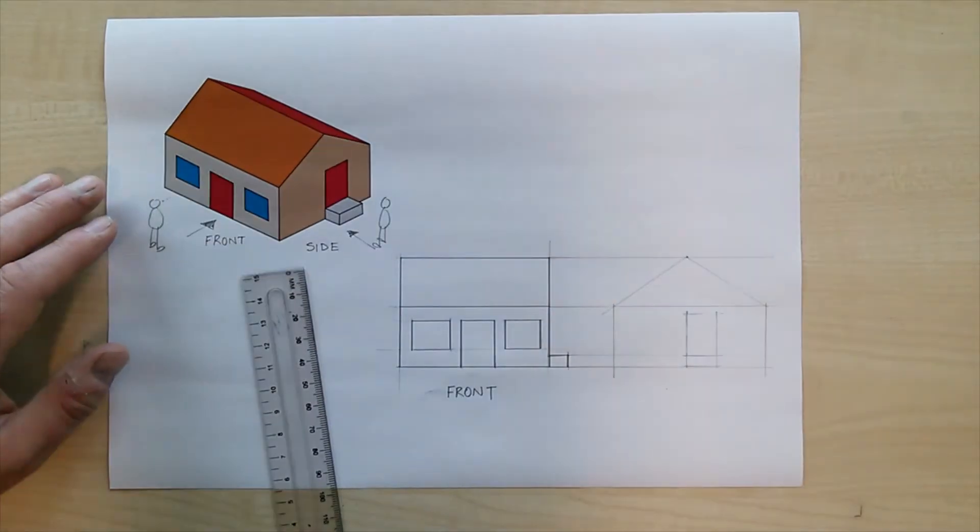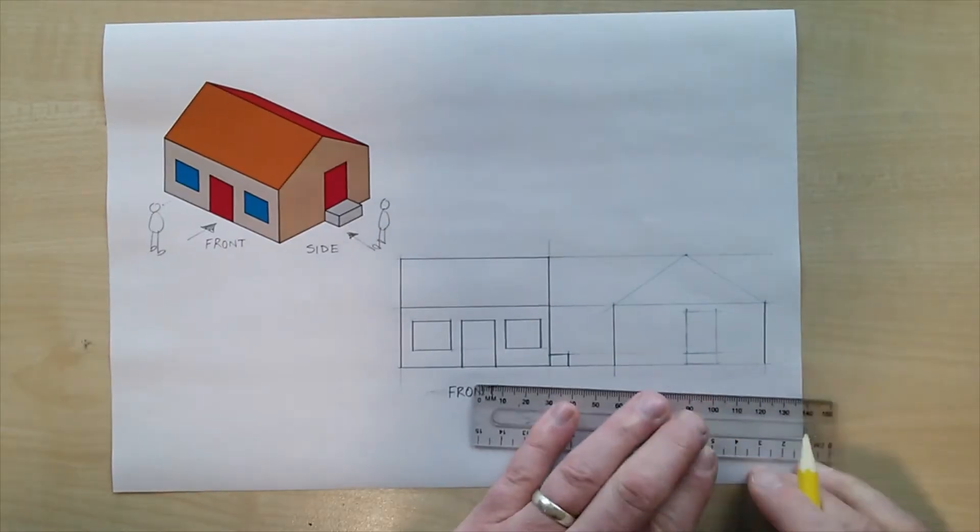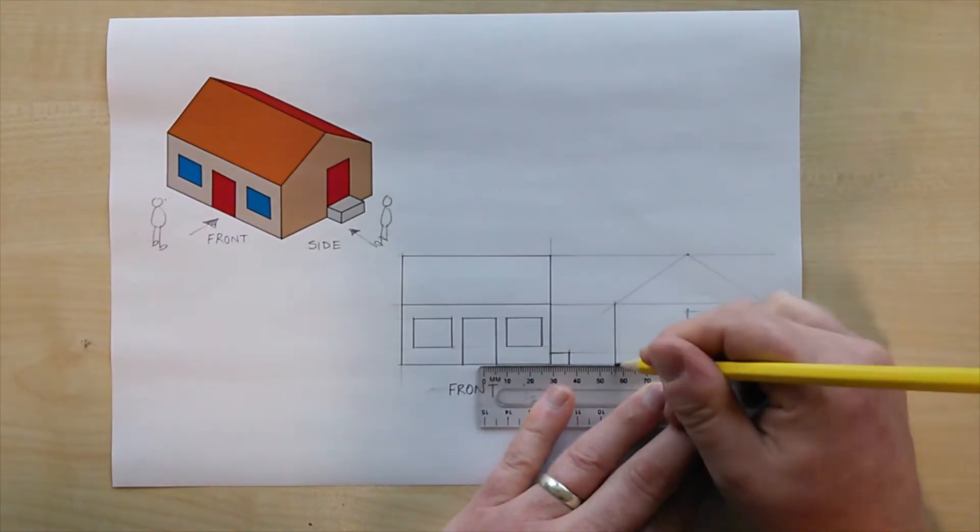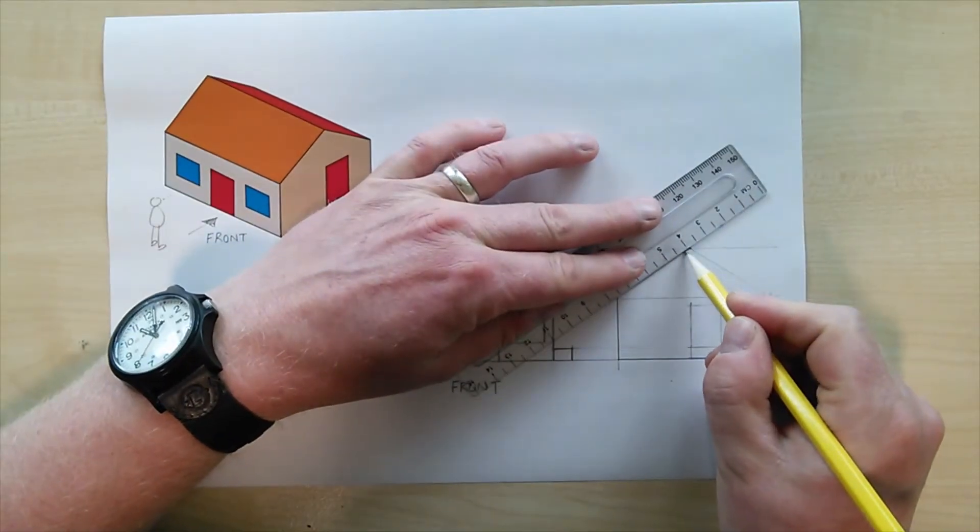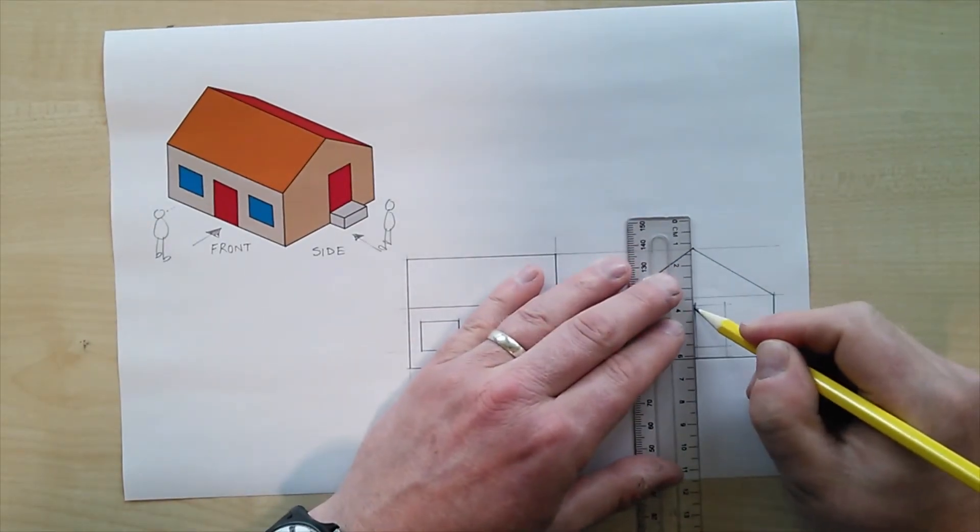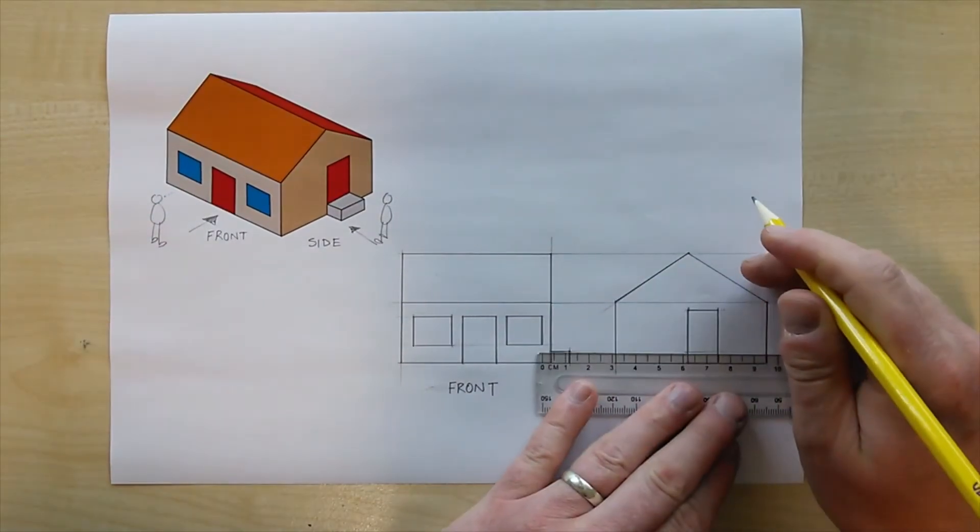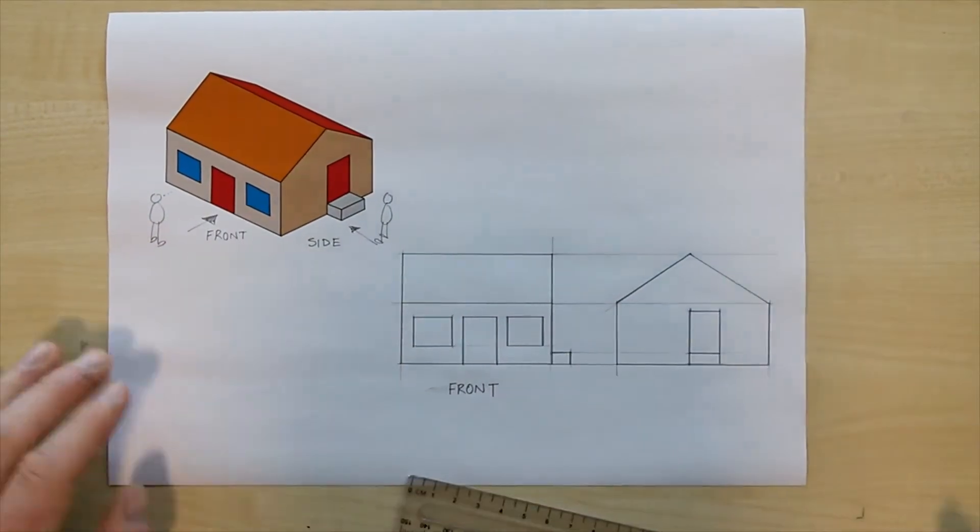With the construction lines drawn it's then a case to go back over your favorite lines, the best of your most accurate lines with a darker stroke and create outlines. And when we create outlines the construction lines fade in importance away. And finally don't forget we have to label that view as well.